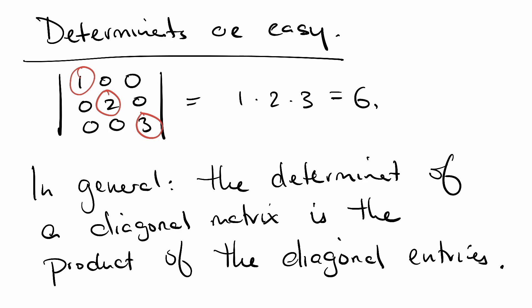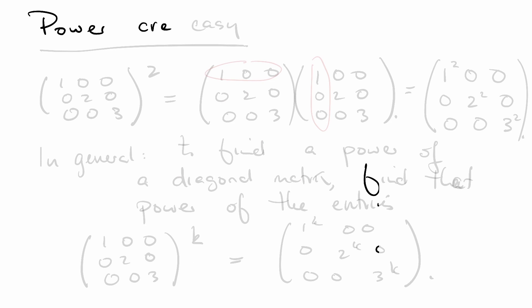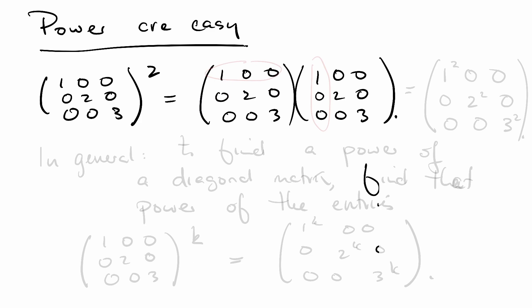Here's another advantage that you might not already know, that powers are easy. So let's take our matrix again, 1, 0, 0, 0, 2, 0, 0, 0, 3. And let's see what happens when we try and square it. This is 1, 0, 0, 0, 2, 0, 0, 0, 3 and the same matrix again. If we were to actually matrix multiply this out, taking the dot product of the appropriate row and the appropriate column, what we'd actually see is that we get 1 by 1 in this top left corner. We're going to get 2 by 2 here and we're going to get 3 by 3 here.